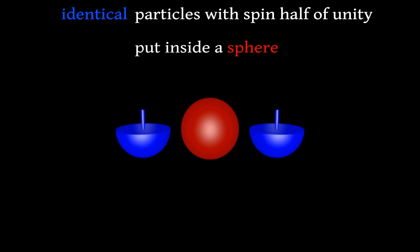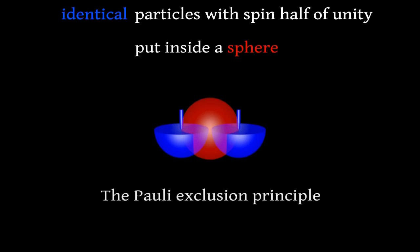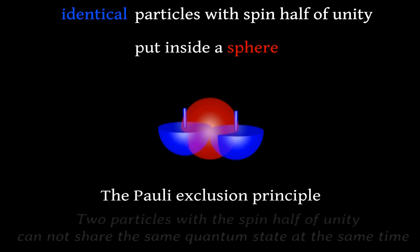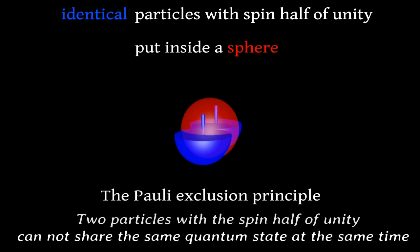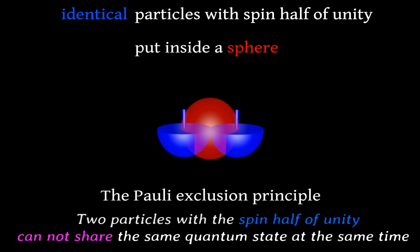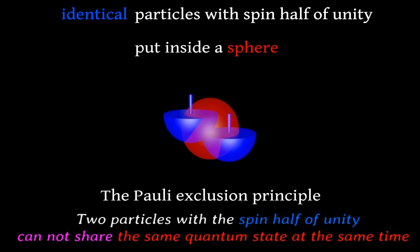There is a fundamental principle of nature, usually called the Pauli exclusion principle, stating that no two particles with spin half of unity can share the same quantum state at the same time.